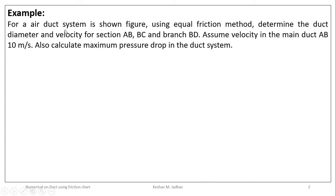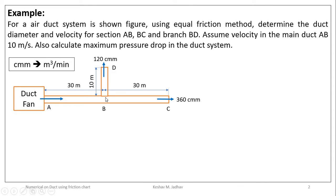For an air duct system as shown in the figure, using the equal friction method, determine the duct diameter and velocity for section AB, BC, and branch BD. Assume velocity in the main duct AB is 10 meters per second. Also calculate the maximum pressure drop in the duct system.